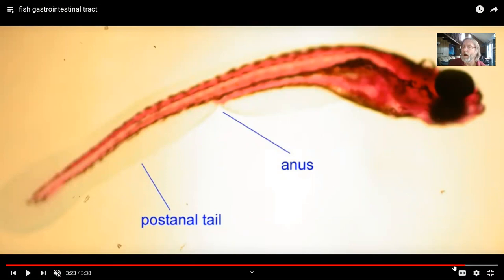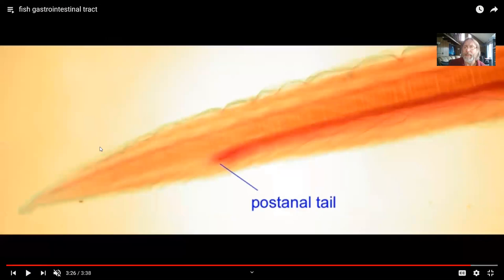One of the defining features of the chordates is a post-anal tail. Even before there were vertebrates and fish, chordates had a muscular tail which was useful in propulsion. Here is the lancelet amphioxus, and notice it has elements beyond the end of the digestive system, unlike most invertebrates.